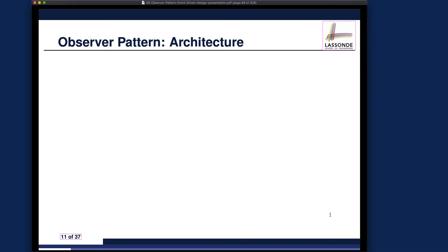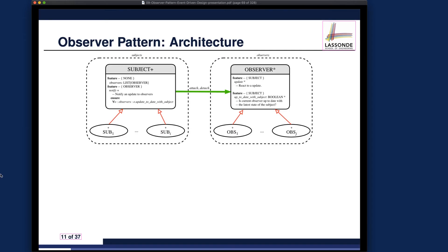Now we're going to talk about the second design, knowing that the first design has its drawback about the potential waste of computing resources when making the remote procedure call. We're going to learn about the architecture for the observer design pattern before we see its implementation. It's actually very important practice to really see the design architecture before diving into the code. This will be the architecture in the Bond diagram syntax.